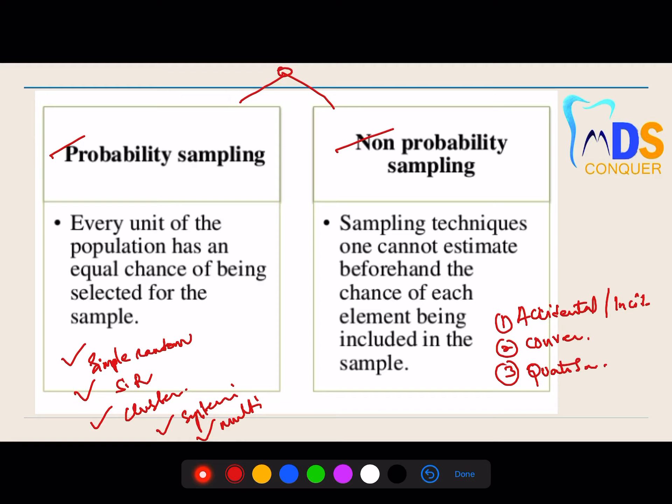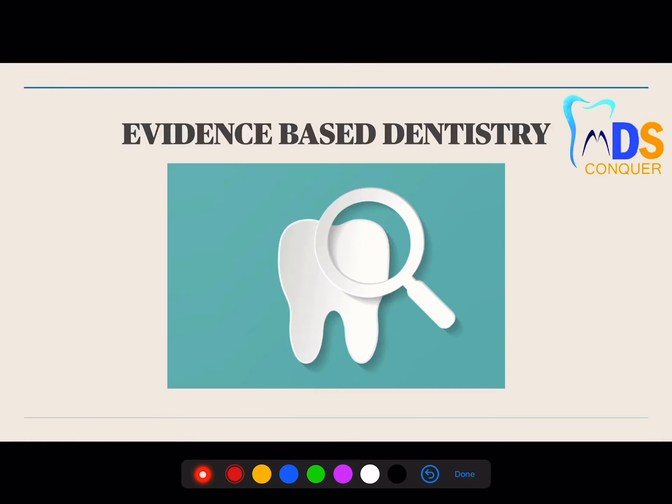The framework is very important — write one or two important points related to each sampling technique and move on, because you need to manage your time. Based on the time available, decide how many points to write about each sampling. This is all about sampling.